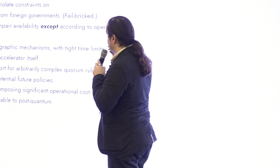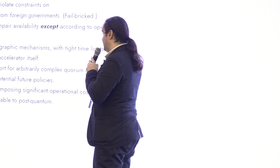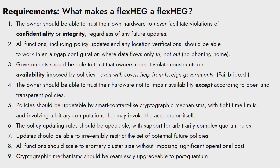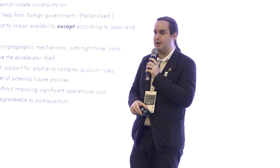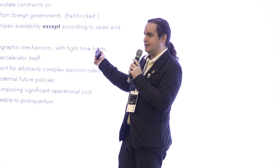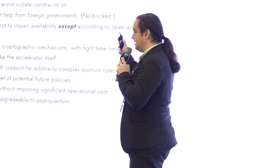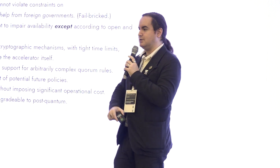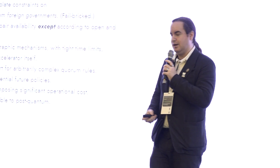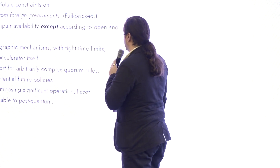The third constraint is the core function from a governance point of view: governments or the governance authority should be able to impose constraints on availability — policies that prevent certain computations from being runnable on this hardware. Unlike confidentiality and integrity, where the owner should be able to trust the systems on their side, with availability it's the governance mechanism that should be able to trust the systems on their side, controlling availability regardless of what the owner tries to do, even if the owner has covert help from foreign governments.